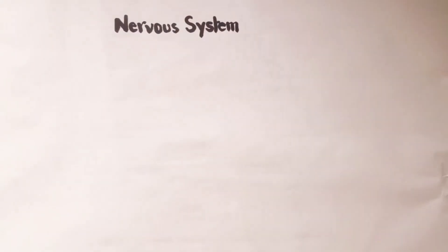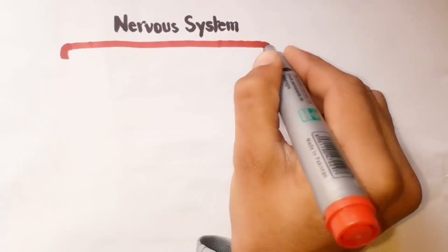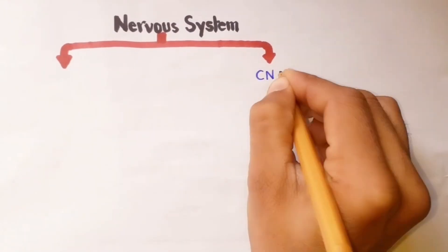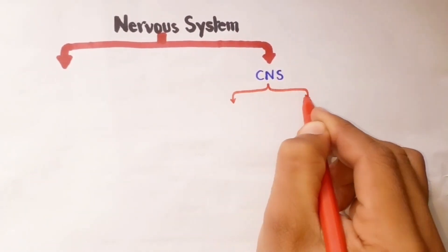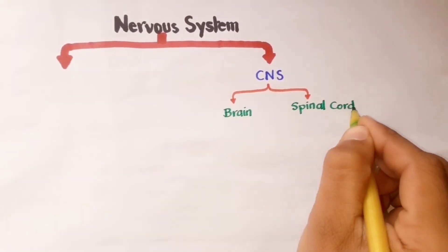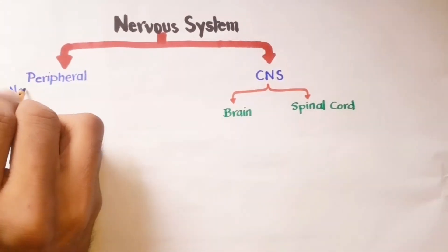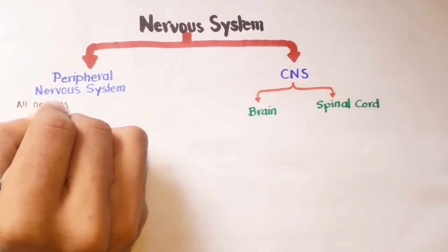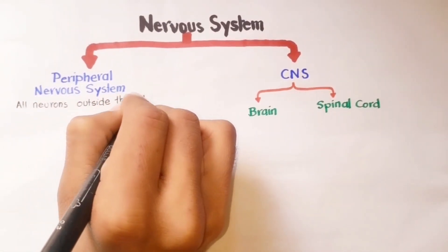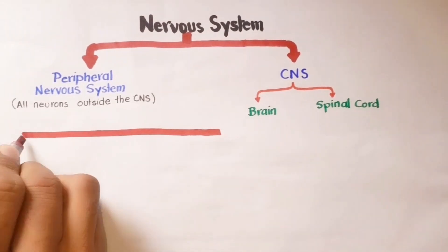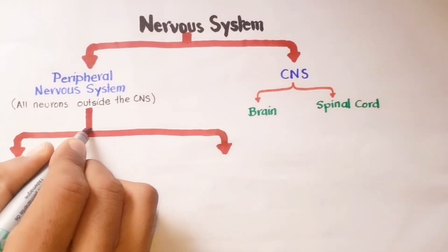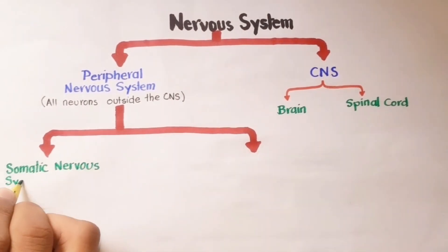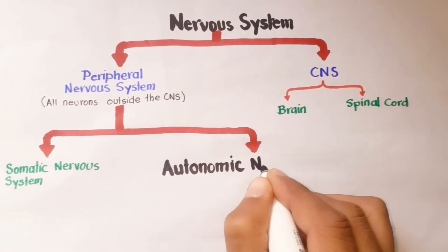Our nervous system is basically divided into two divisions: the central nervous system, consisting of brain and spinal cord, and the peripheral nervous system, which consists of all neurons outside the central nervous system. This peripheral nervous system is generally divided into the somatic nervous system and the autonomic nervous system.